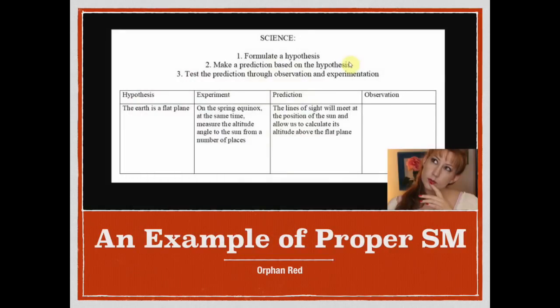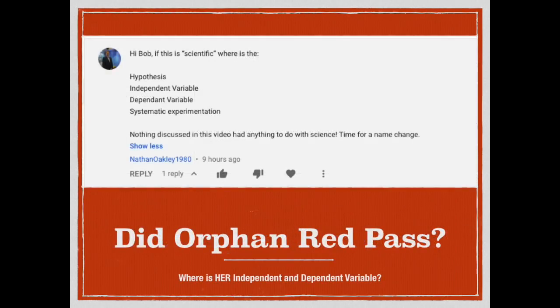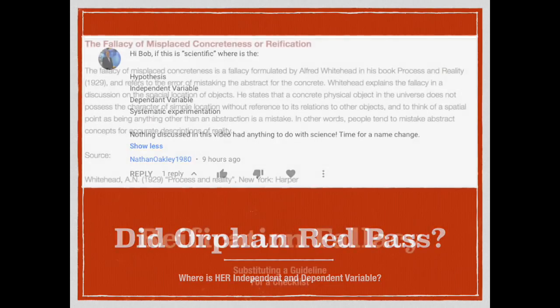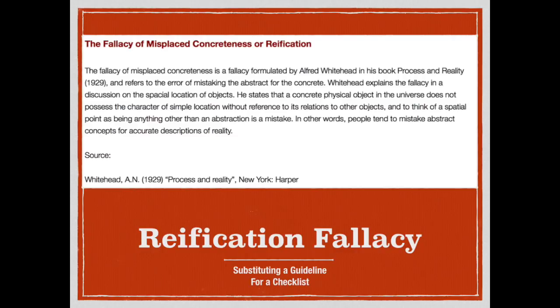Which brings us to the lovely Orphan Red. She recently designed an experiment to test Eratosthenes, and this is the write-up of her scientific method — and she did a fine job. But the question is, would she meet Mr. Oakley's muster for scientific method? Where are her independent and dependent variables, and are they actually even needed? In reality, to insist that she has to fill out this checklist for scientific method is what's called a reification fallacy. This is akin to declaring baseball not to be a sport because it doesn't follow the rules of soccer.